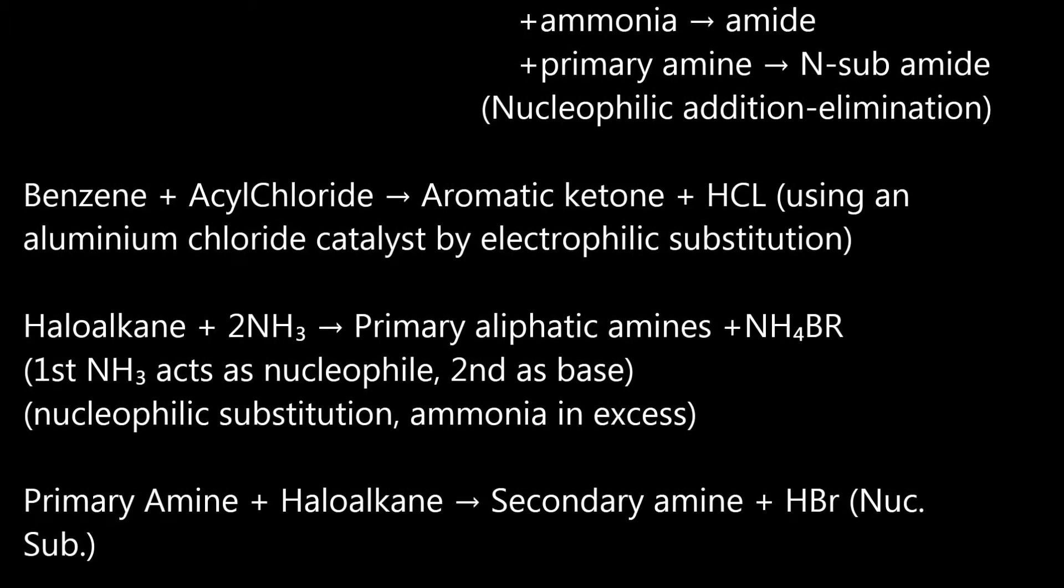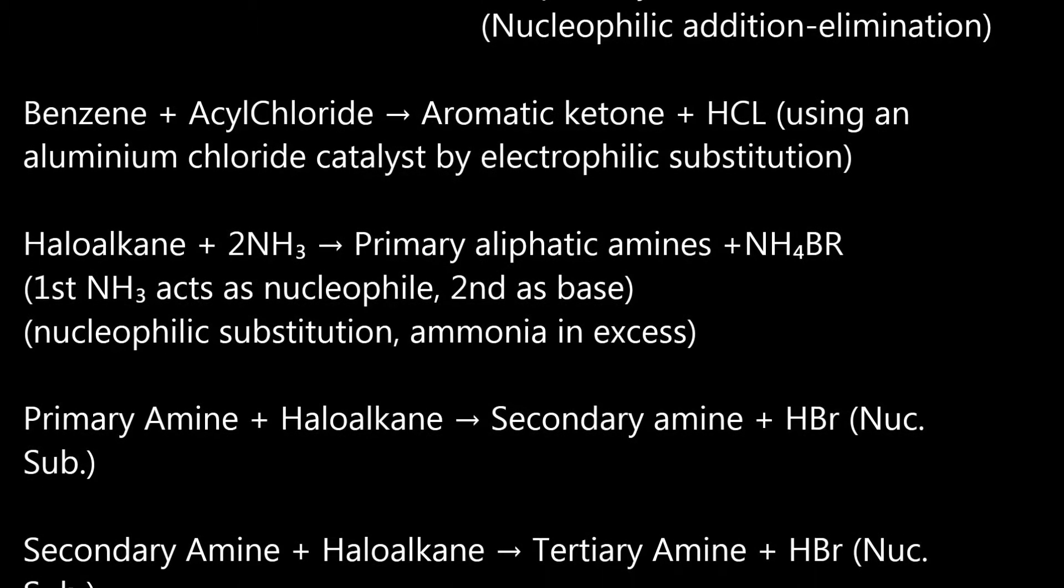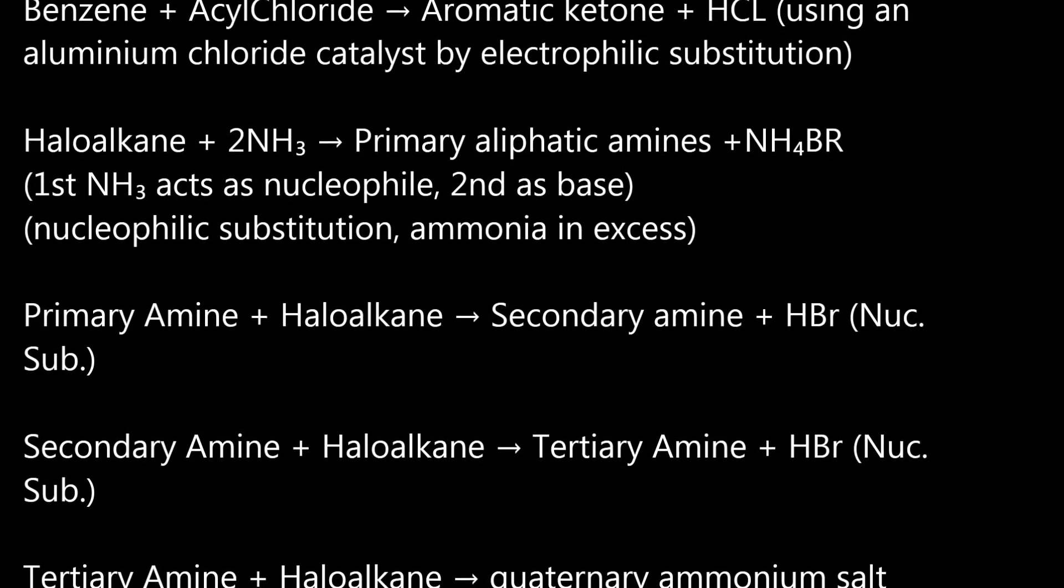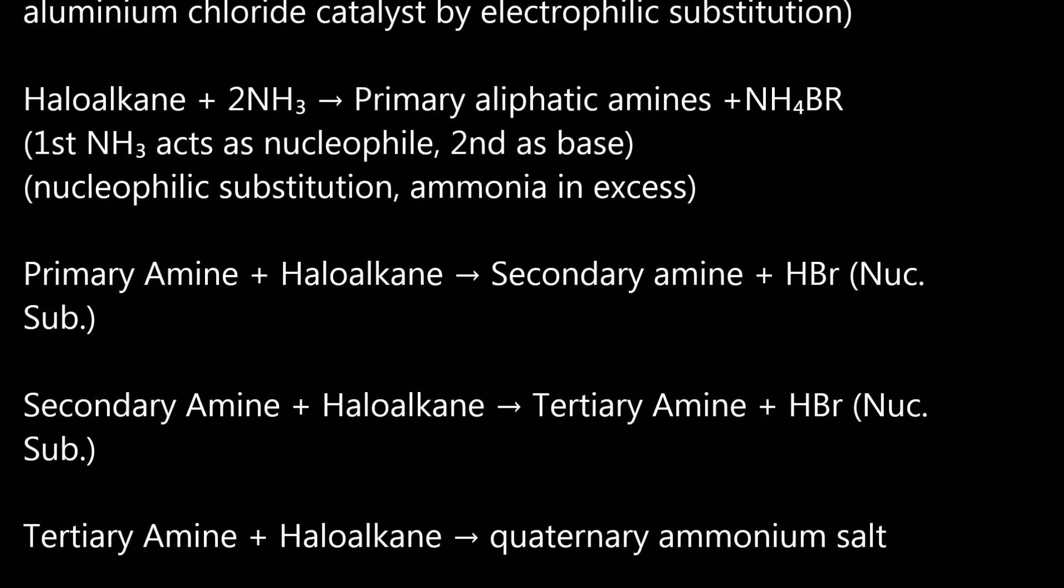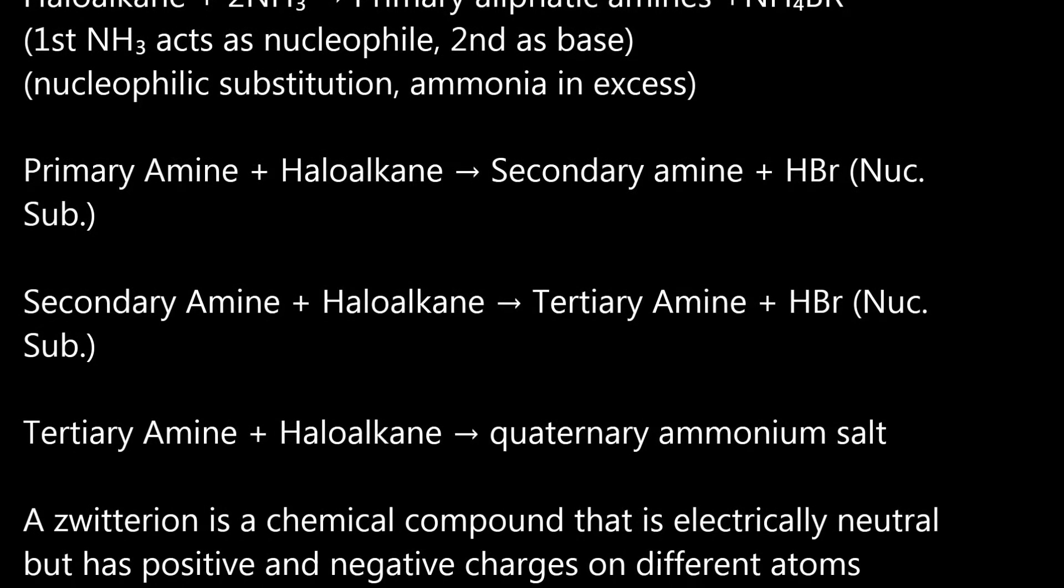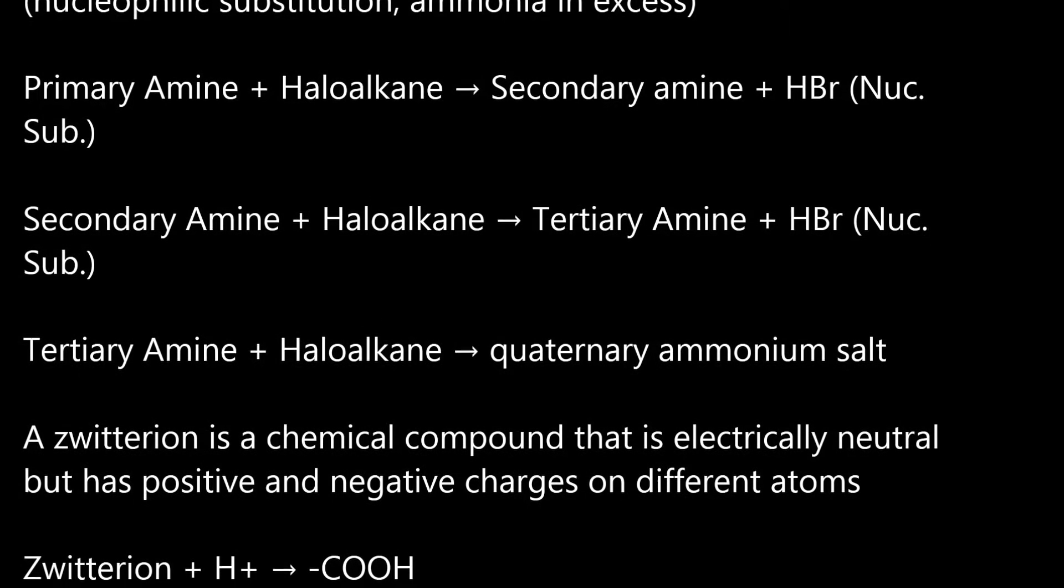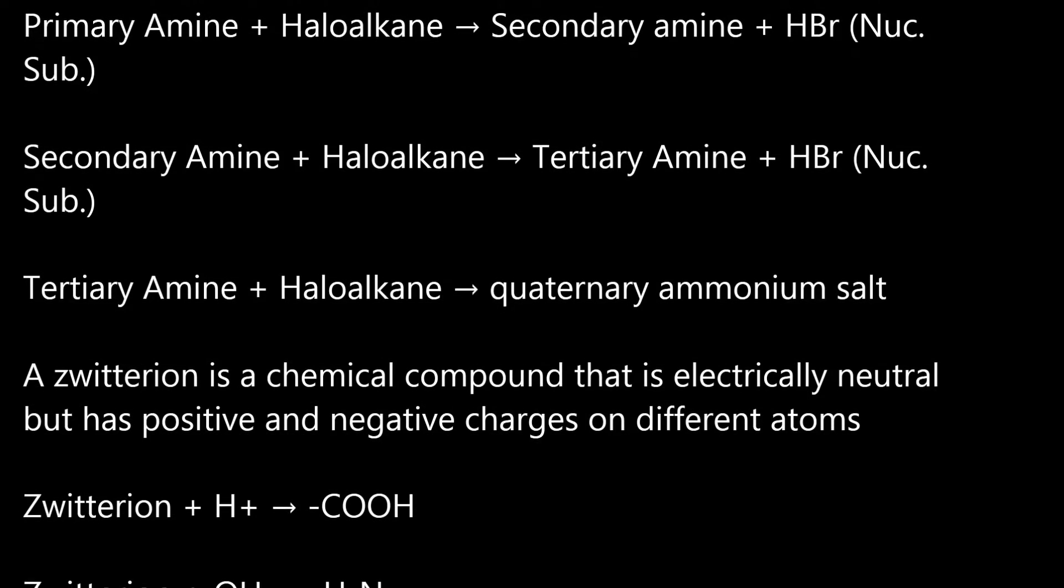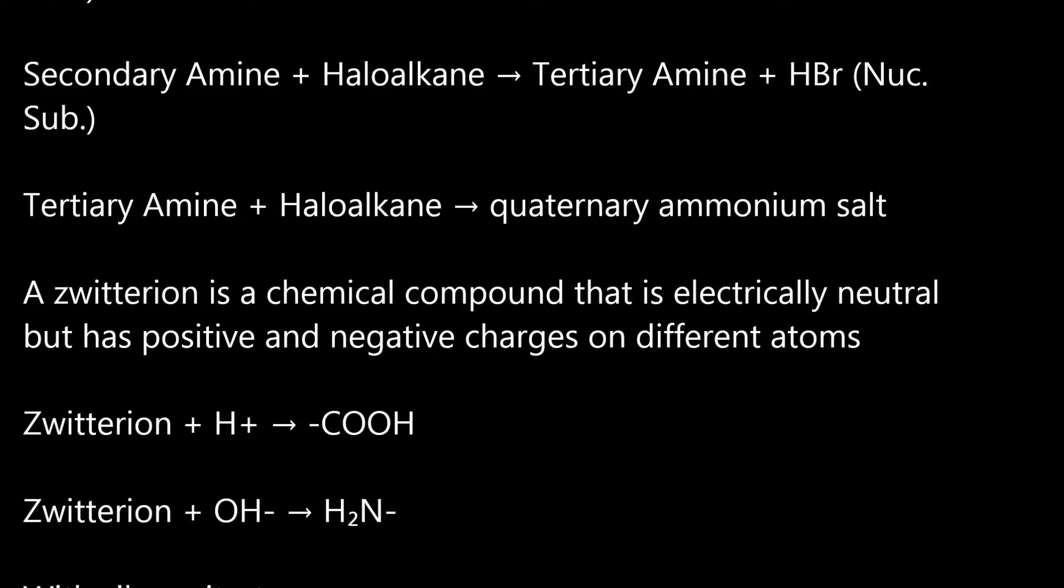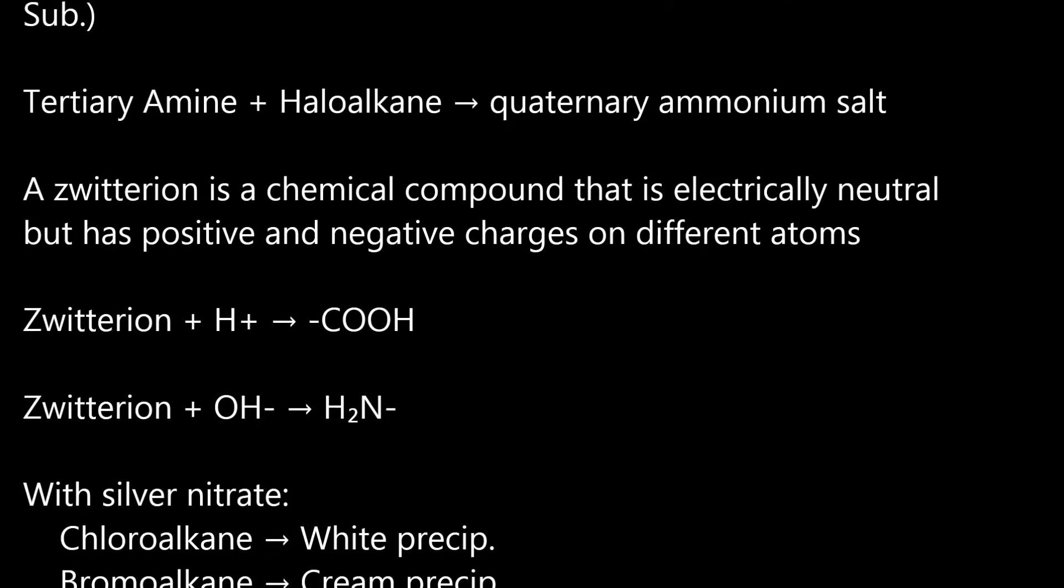Haloalkane plus 2NH3 goes to primary aliphatic amines plus NH4Br. First NH3 acts as nucleophile, second as base, nucleophilic substitution, ammonia in excess. Primary amine plus haloalkane goes to secondary amine plus HBr by nucleophilic substitution. Secondary amine plus haloalkane goes to tertiary amine plus HBr by nucleophilic substitution. Tertiary amine plus haloalkane goes to quaternary ammonium salt.